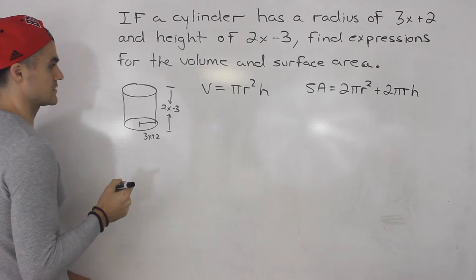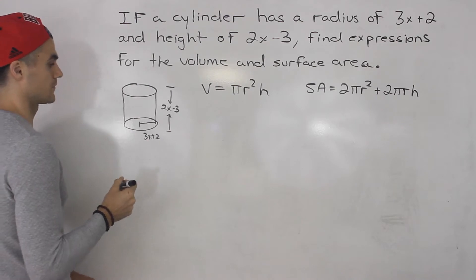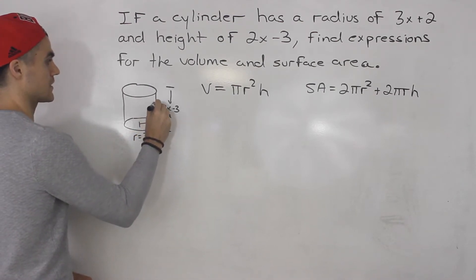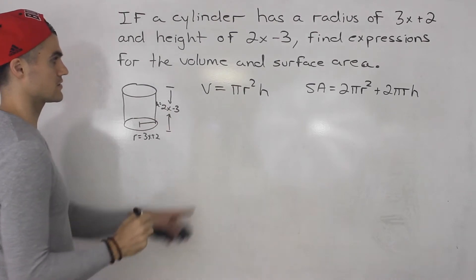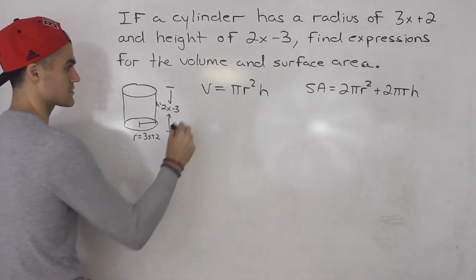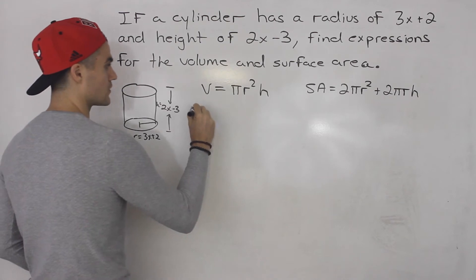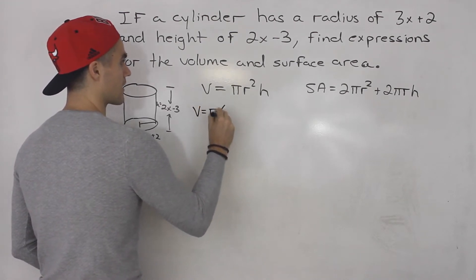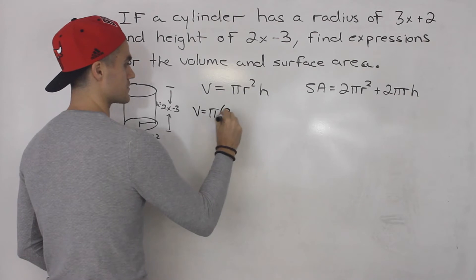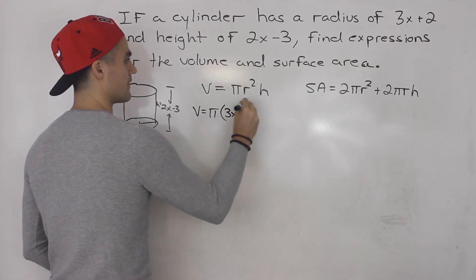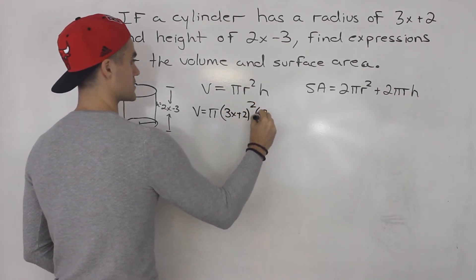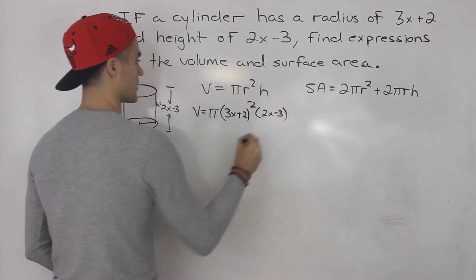So basically what we have to do is take the radius of 3x plus 2 and the height of 2x minus 3 and just sub it in for r and h for both of these expressions, then simplify. Starting off with the volume we would have pi, the radius is 3x plus 2 and that is squared, times 2x minus 3.